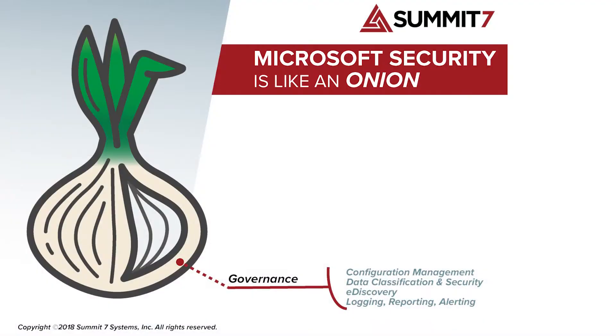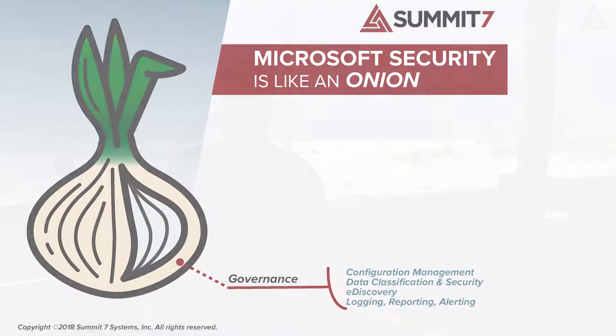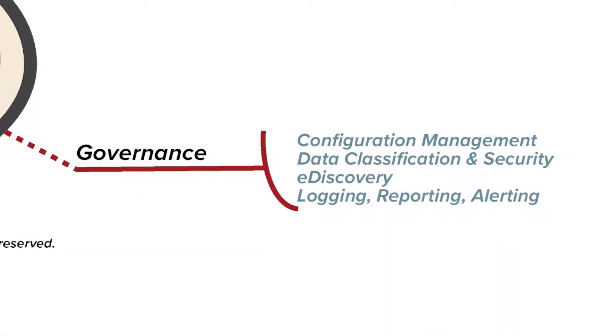The last layer of the onion is a piece that people don't like to talk about as much, but it's around governance. The way I think about Office 365 governance is it's a wrapper around the entire onion.